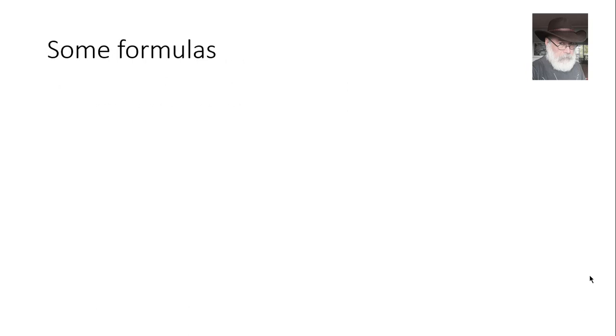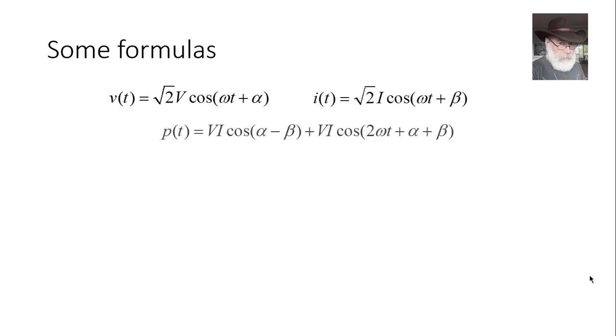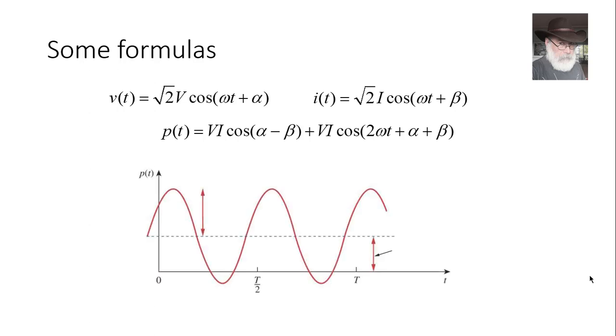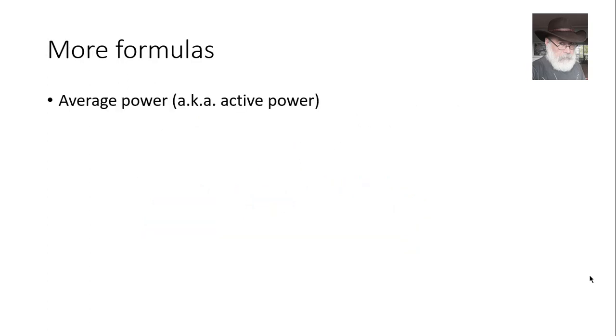Let's review some formulas we use in solving circuits in AC steady state about power. The voltage, the current, the instantaneous power. Here I am emphasizing the RMS value of the voltage uppercase V, the RMS value of the current uppercase I. The power, the instantaneous power, is not constant. It is oscillating around an average value of V I cosine of alpha minus beta. That is the average power. The active power.